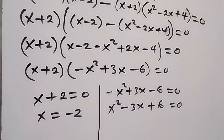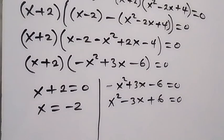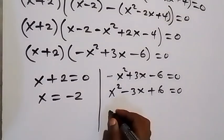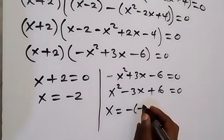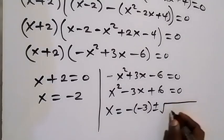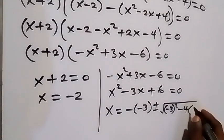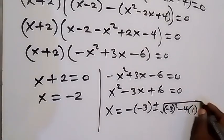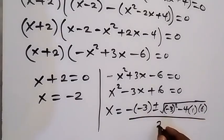Now we use the quadratic formula. Here x equals minus b, where b is minus 3, so minus b is plus 3, plus or minus the square root of b squared minus 4ac — that is, minus 3 squared minus 4 times 1 times 6 — all over 2a, which is 2 times 1, so over 2.